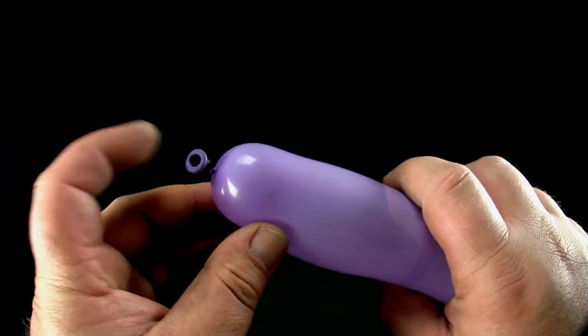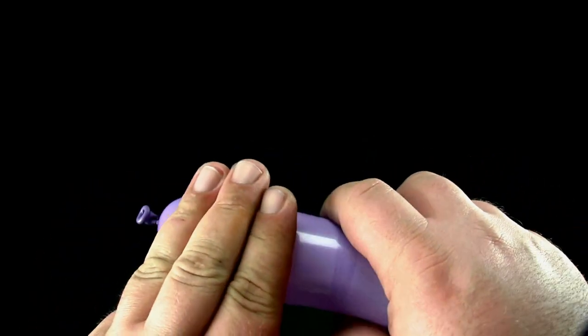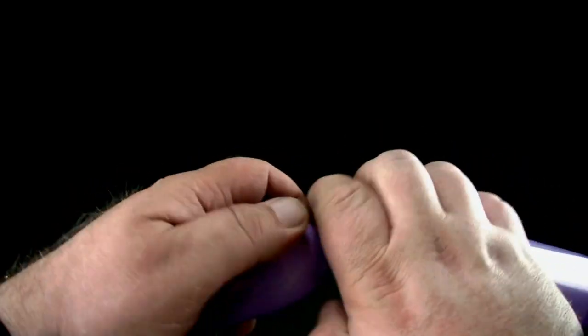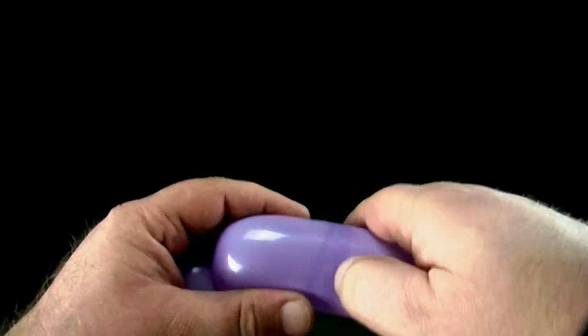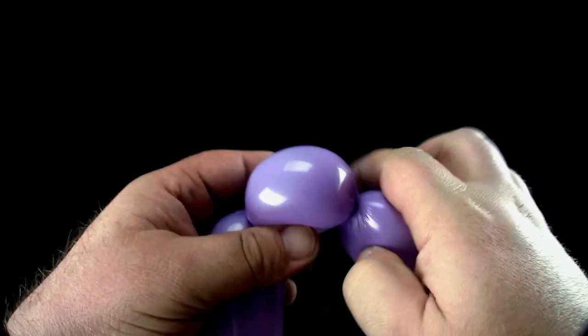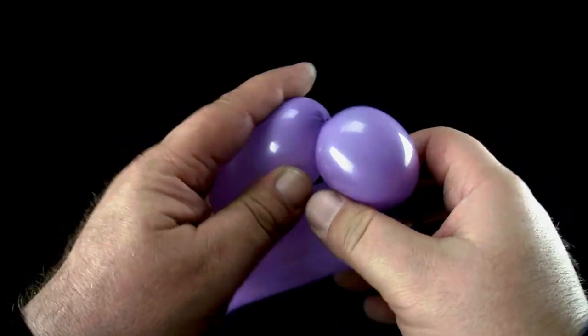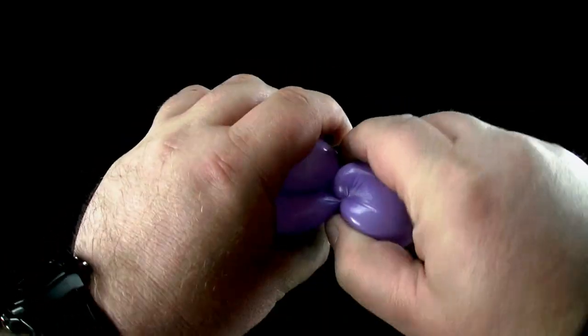Begin twisting your design at the nozzle end of the balloon. Start with a three-finger bubble. Then twist a one-finger bubble. Pinch-twist the one-finger bubble.